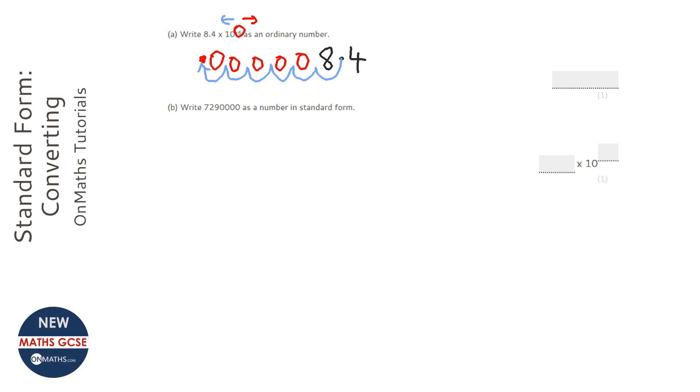And whenever you've got just a decimal point you need to have something before it so we put a zero before it. So the answer will be 0.00000084. Let's just count, there's five zeros.